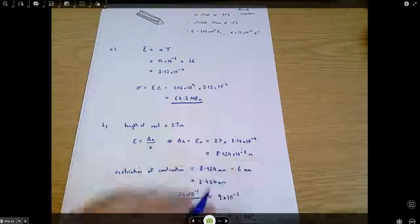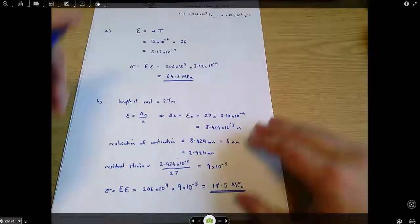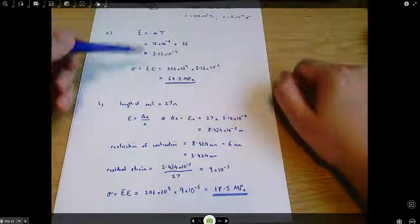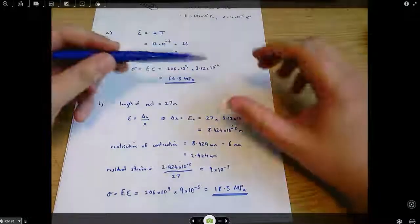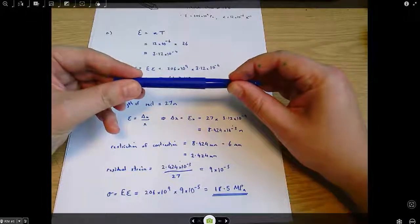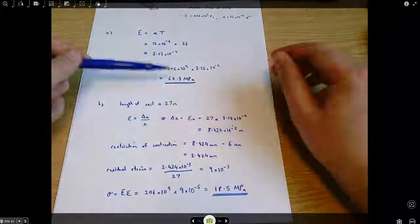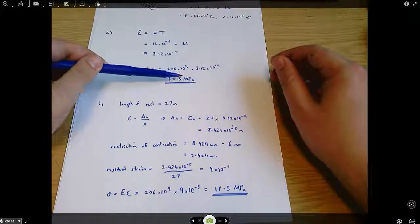So, there's two different cases that we're working with there. In the first case, the rail is completely stopped from contracting. It's held firmly in place, and that leads to a stress of 64.3 megapascals.